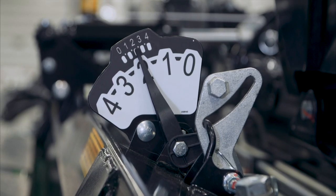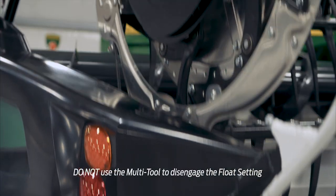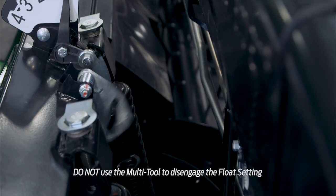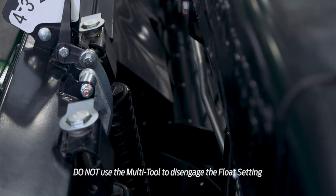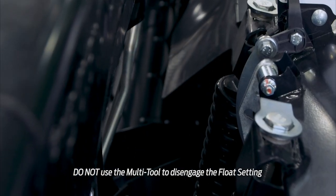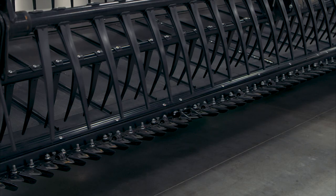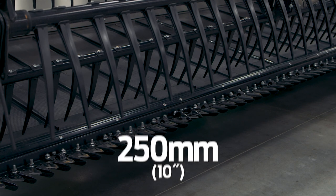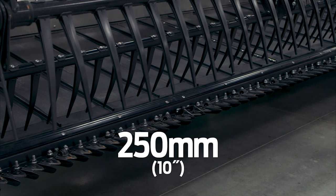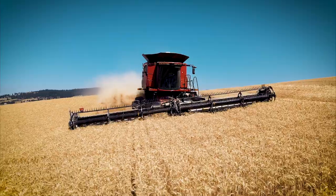Once float setting is complete, use the combine and lower the header fully to the ground. This will disengage the float setting mechanism. After the float setting mechanisms have disengaged, lift the header off the ground approximately 250mm and proceed to wing balance adjustments.